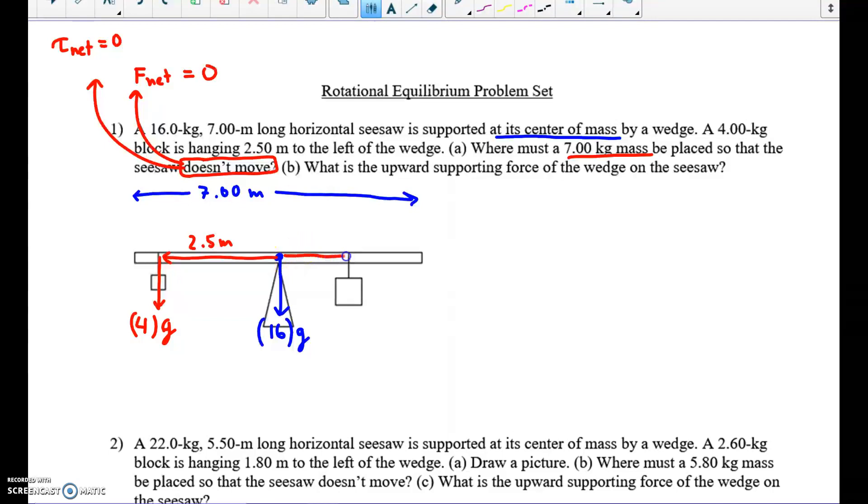And we have to find where to put that 7 kilogram mass. Well, clearly we have to put it somewhere on the other side. We do not know this R value. But we know how hard it pulls down. It pulls down with a force of 7 times 9.81. Those are not the only forces. We have one more that we haven't drawn. The wedge is pushing the thing up with some supporting force. We'll call that the normal force.